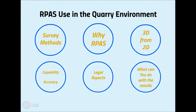What I want to talk about today is how I use our RPAS systems for surveying within quarries. Firstly, I will give a brief rundown on surveying methods, then explain why I chose to go with a remotely piloted aerial system. I will describe how we get 3D data from 2D images, followed by an overview of RPAS capabilities, limitations, and achievable accuracies. I'm also going to make you aware of the current legal restrictions on using these systems, and lastly, I will show you some examples of what we do with the resulting data.